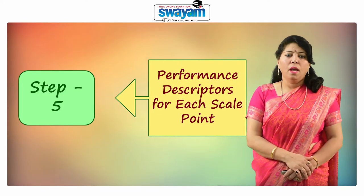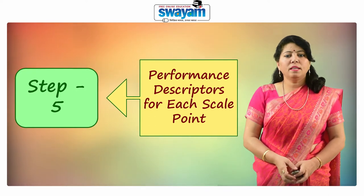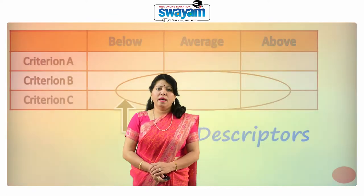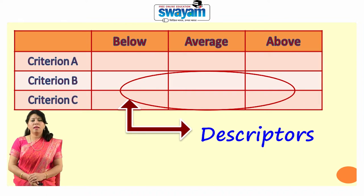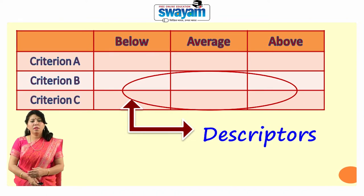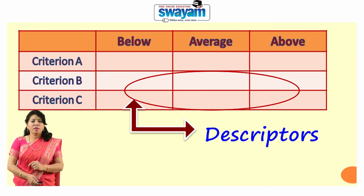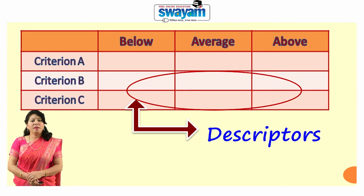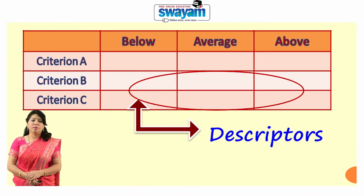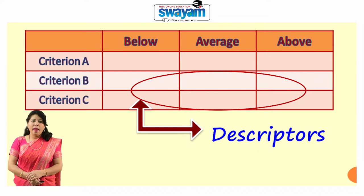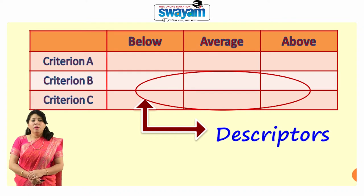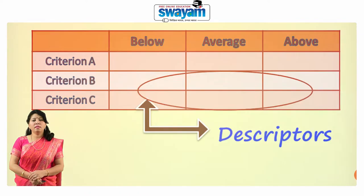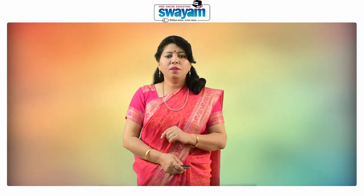Step five is writing performance descriptors for each scale point. Fifth step in creating a rubric is to write descriptions — performance descriptors — for each scale point. Writing performance descriptions is a tricky step, but if the characteristics of good descriptors are clear, then writing good descriptors becomes easy. Descriptors need to use parallel and consistent wording across the scale. The description of behavior should be the same across the scale but vary in degree.